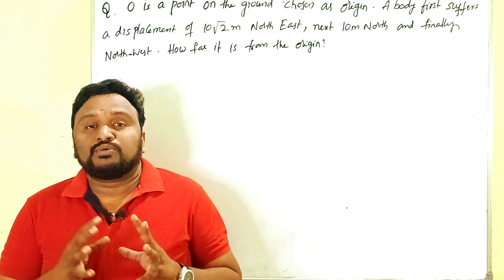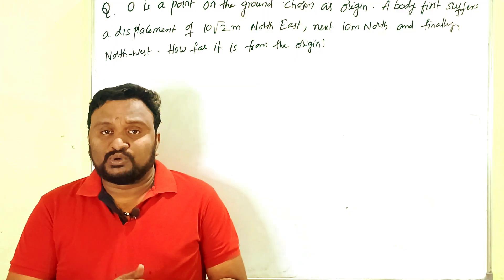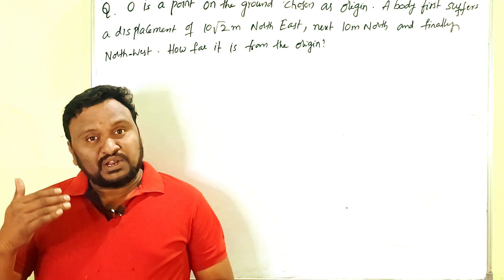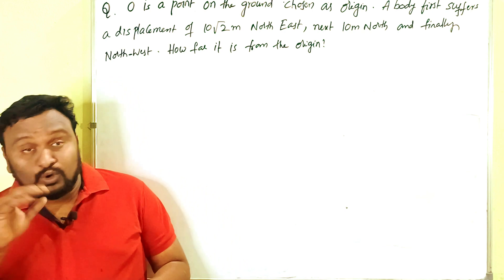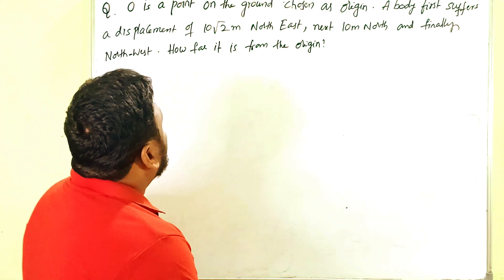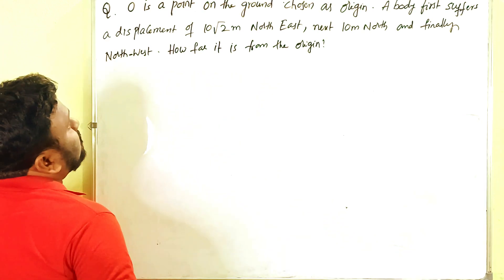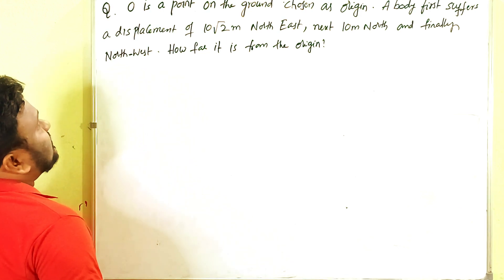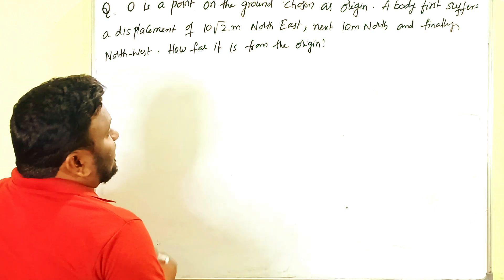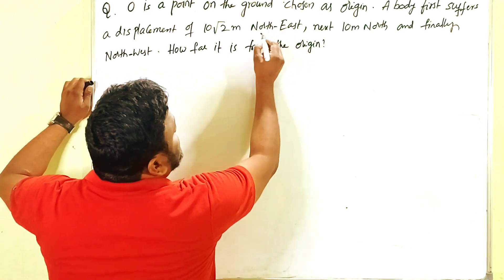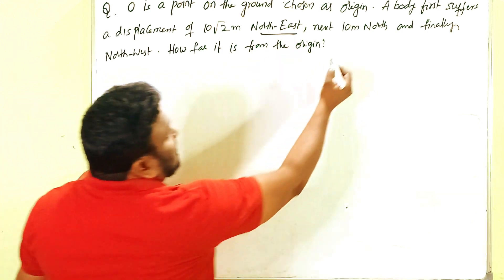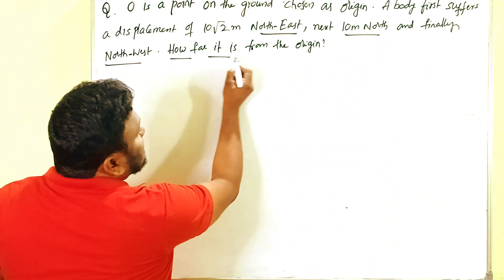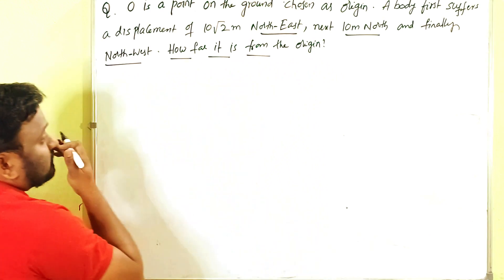This is one of the most important problems from the chapter of motion in a plane. It is a PYQ — previous year question — worth four marks and a very interesting problem. O is a point on the ground chosen as origin. A body first suffers a displacement of 10√2 kilometers in north-east, next 10 meters north, and finally north-west. How far is it from the origin?